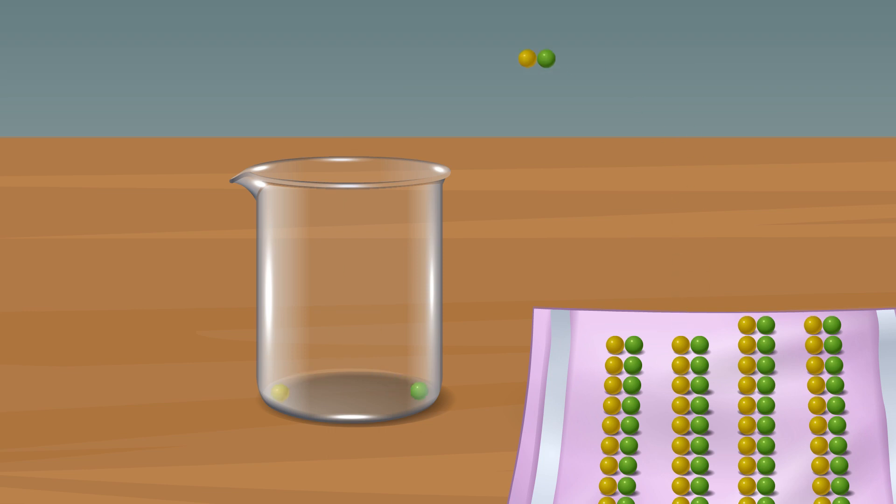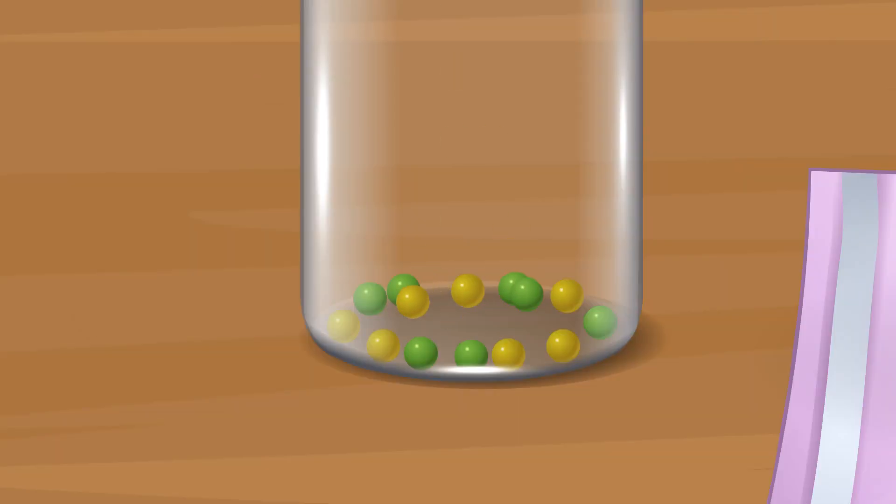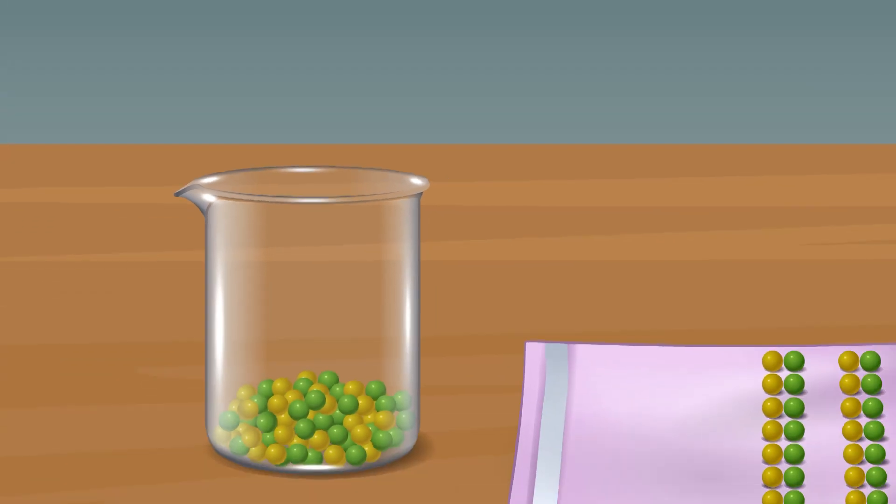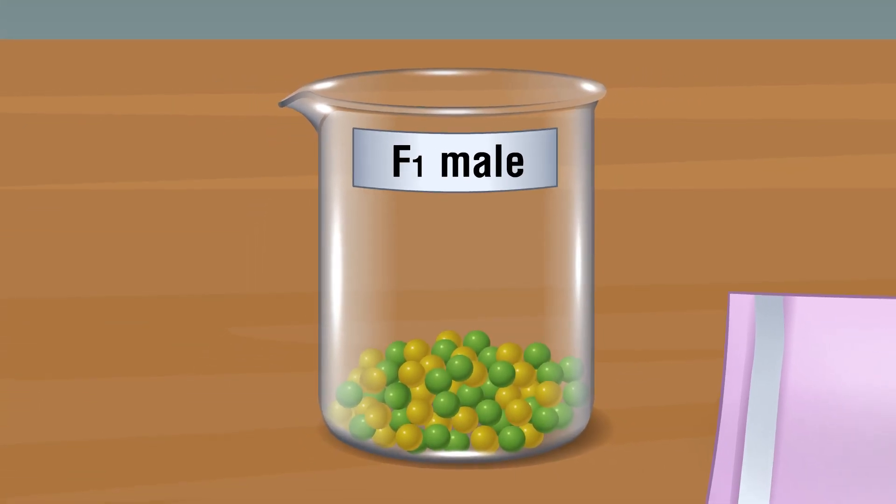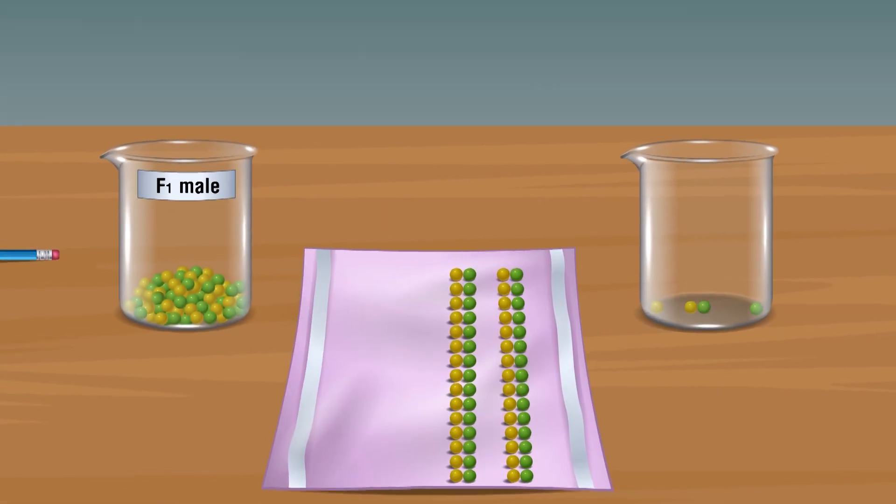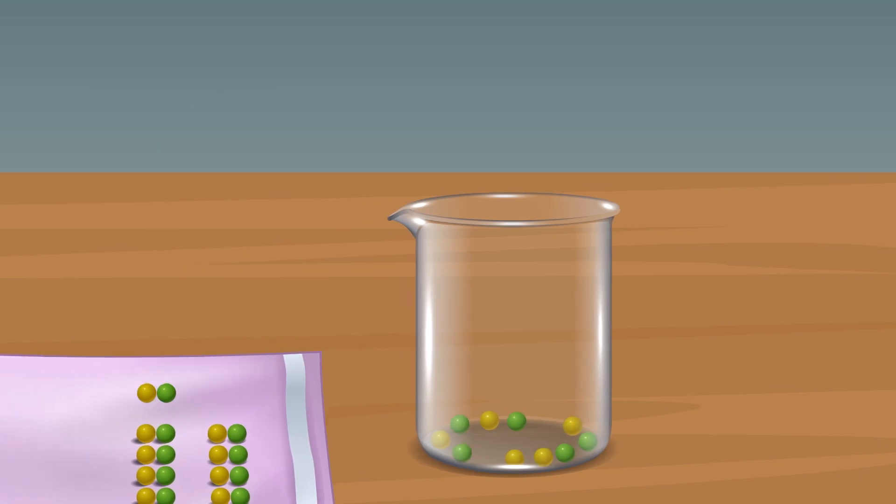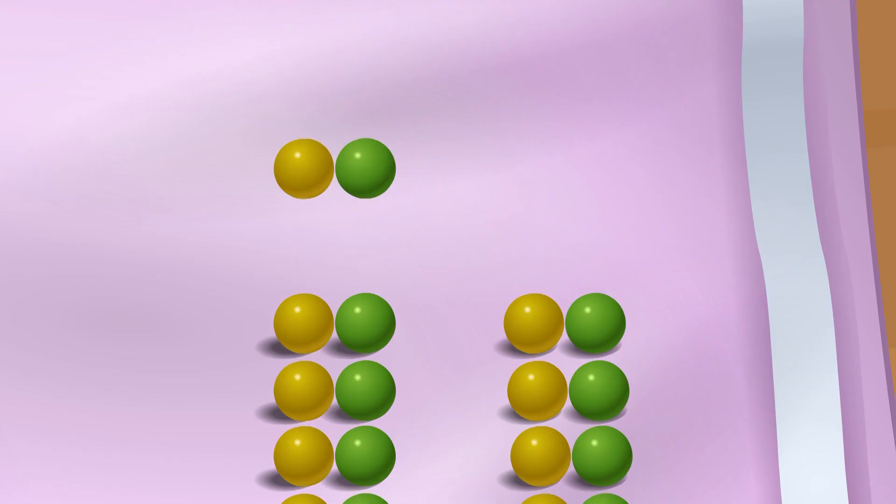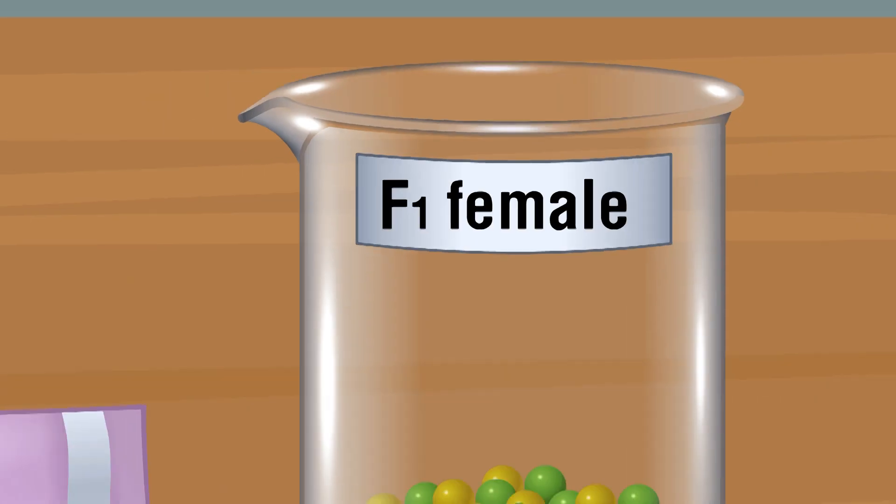Take the first set of 32 pairs and put it in one new beaker and label it as F1 male. Take another set of 32 pairs and put it in another new beaker and label it as F1 female.